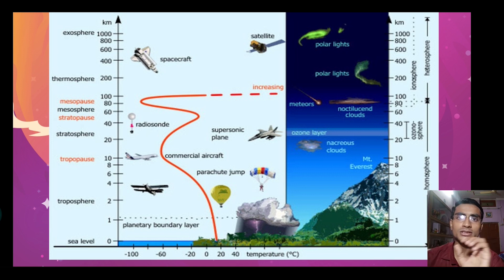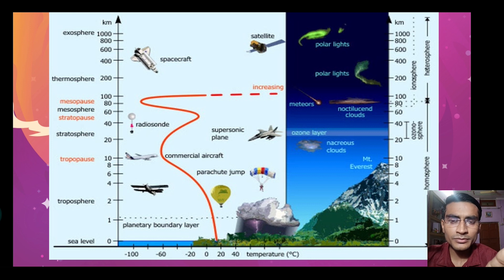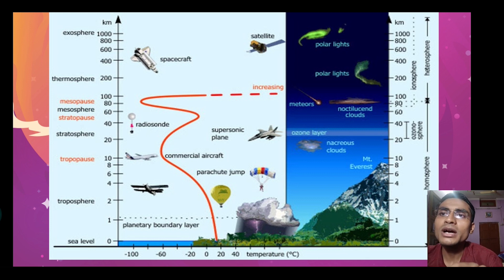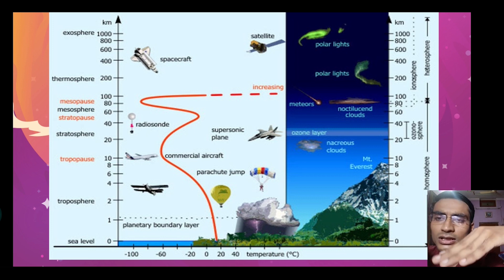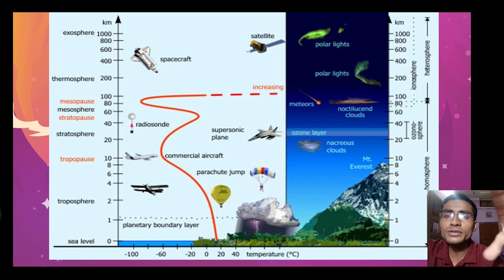On the x-axis we plot temperature and on the y-axis we plot height. Starting from sea level up to 8848 m (Mount Everest), we can see troposphere first. After troposphere ends, we get the tropopause. Between troposphere and tropopause is where we do parachute jumps, commercial aircraft travel, and where the planetary boundary layer exists.